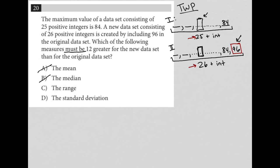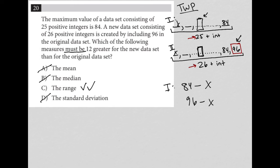For choice C, the range: the range for data set one is 84 minus the lowest value, which I'll call X. For data set two, it's 96 minus that lowest value. That gives you a difference of 12. Standard deviation is no good. So C is the best answer here.